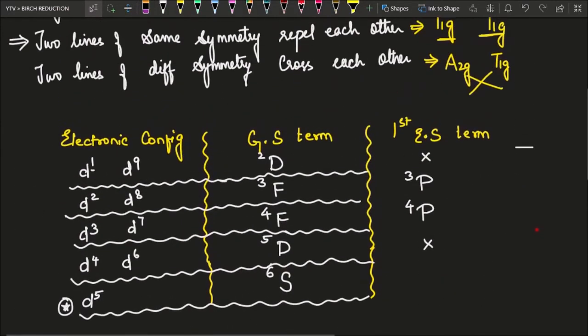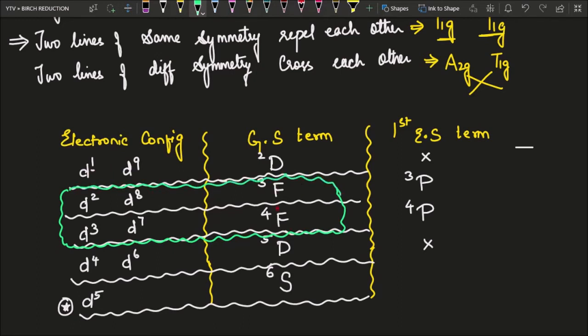For the Orgel diagram we will have two sets of graphs. D2, D8, D3, and D7 will have one Orgel diagram because they have the same ground state term. For D1, D9, D4, and D6 we draw a second graph. So basically we have to remember two graphs — two tables and two graphs is what we need for the Orgel diagram.